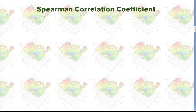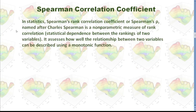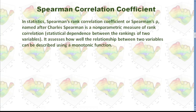Now let's check out the Spearman correlation coefficient. In Pearson's correlation, we are checking linear relationship. But in the Spearman correlation, we use rank correlation, and it is a non-parametric measure of rank correlation. It assesses how well the relationship between two variables can be described using a monotonic function.